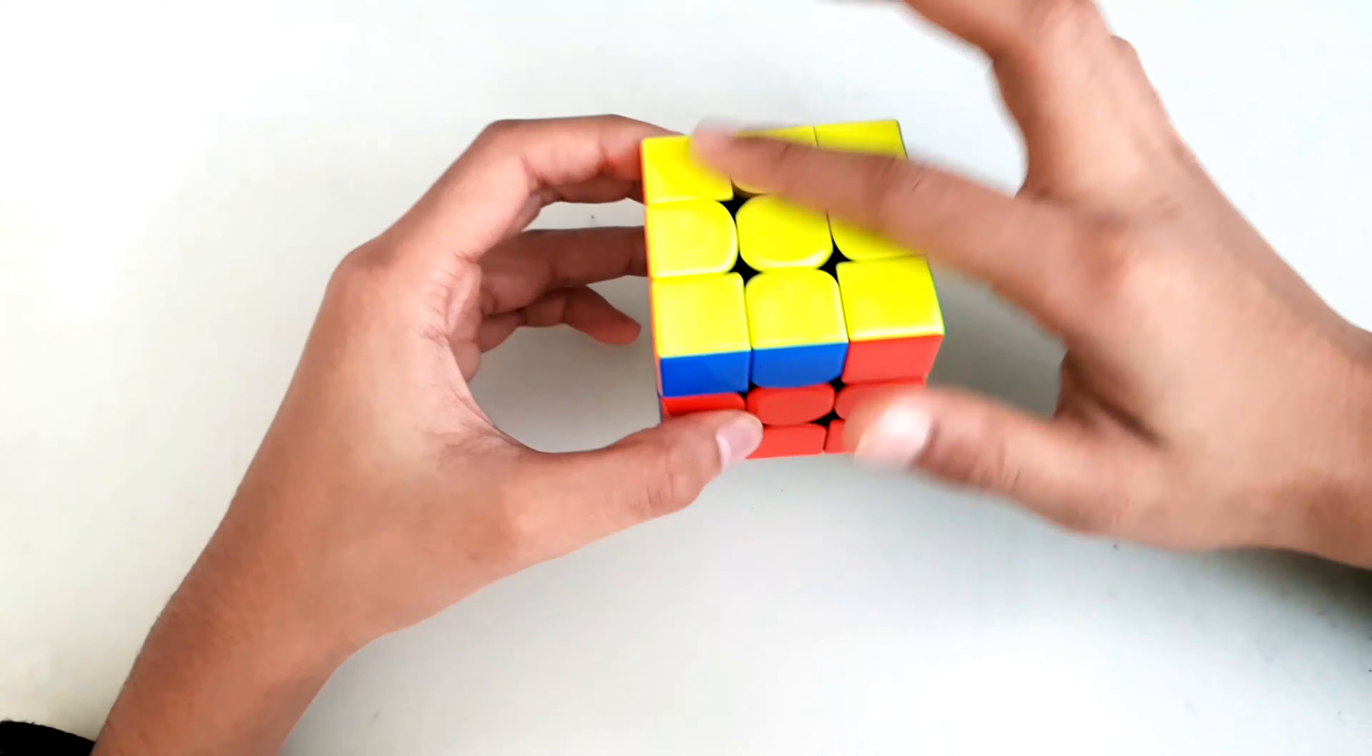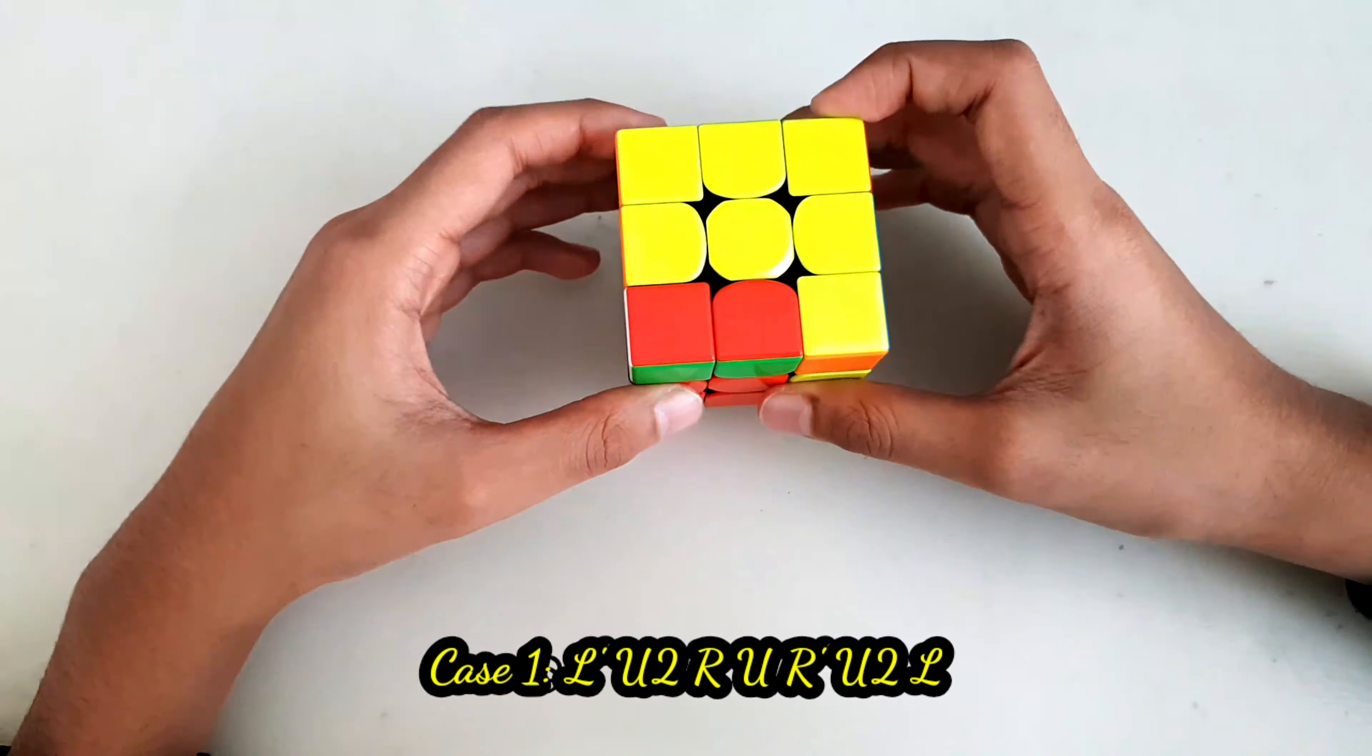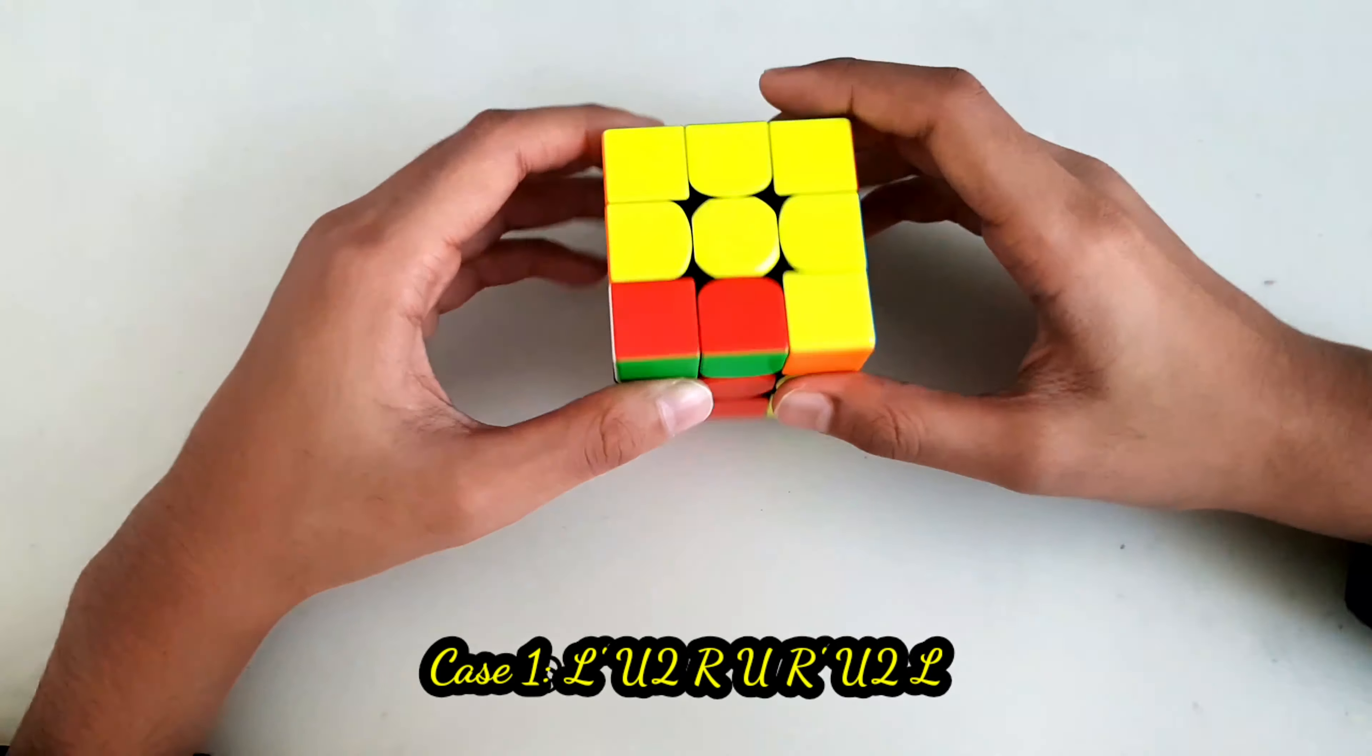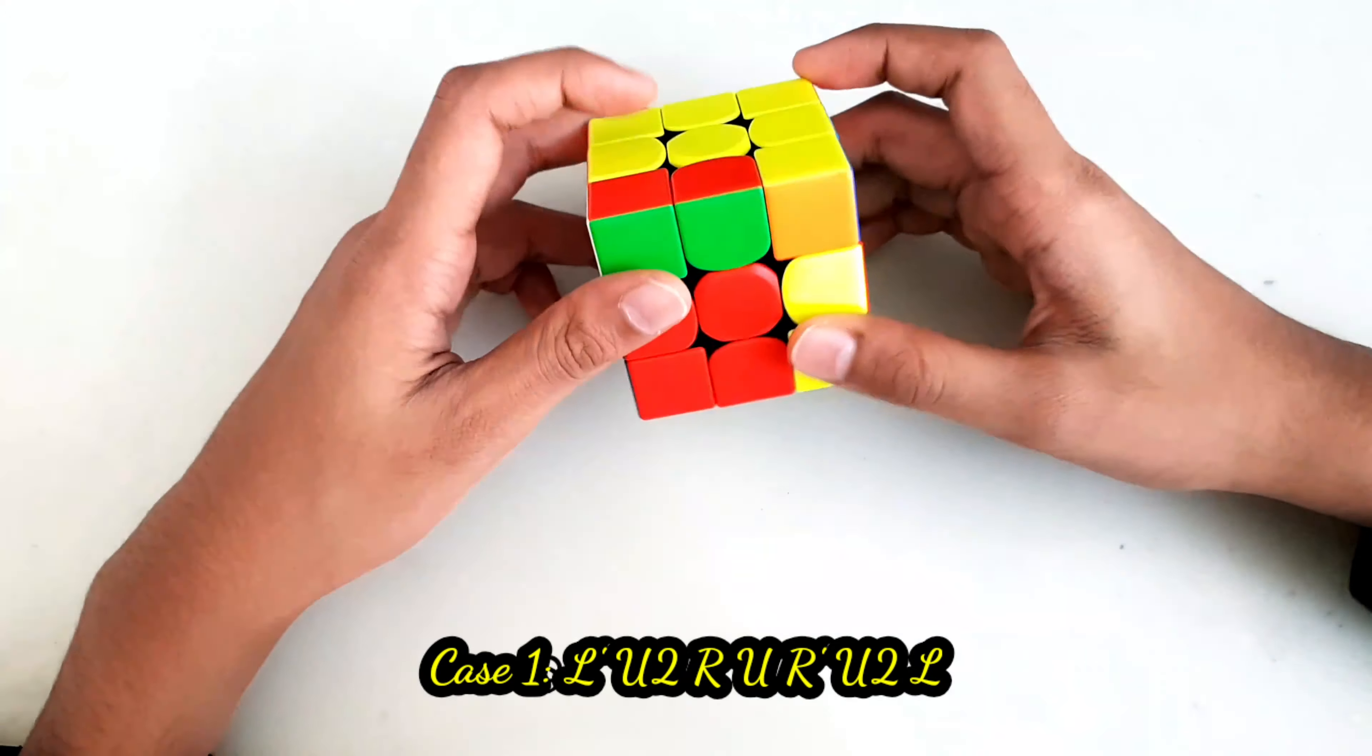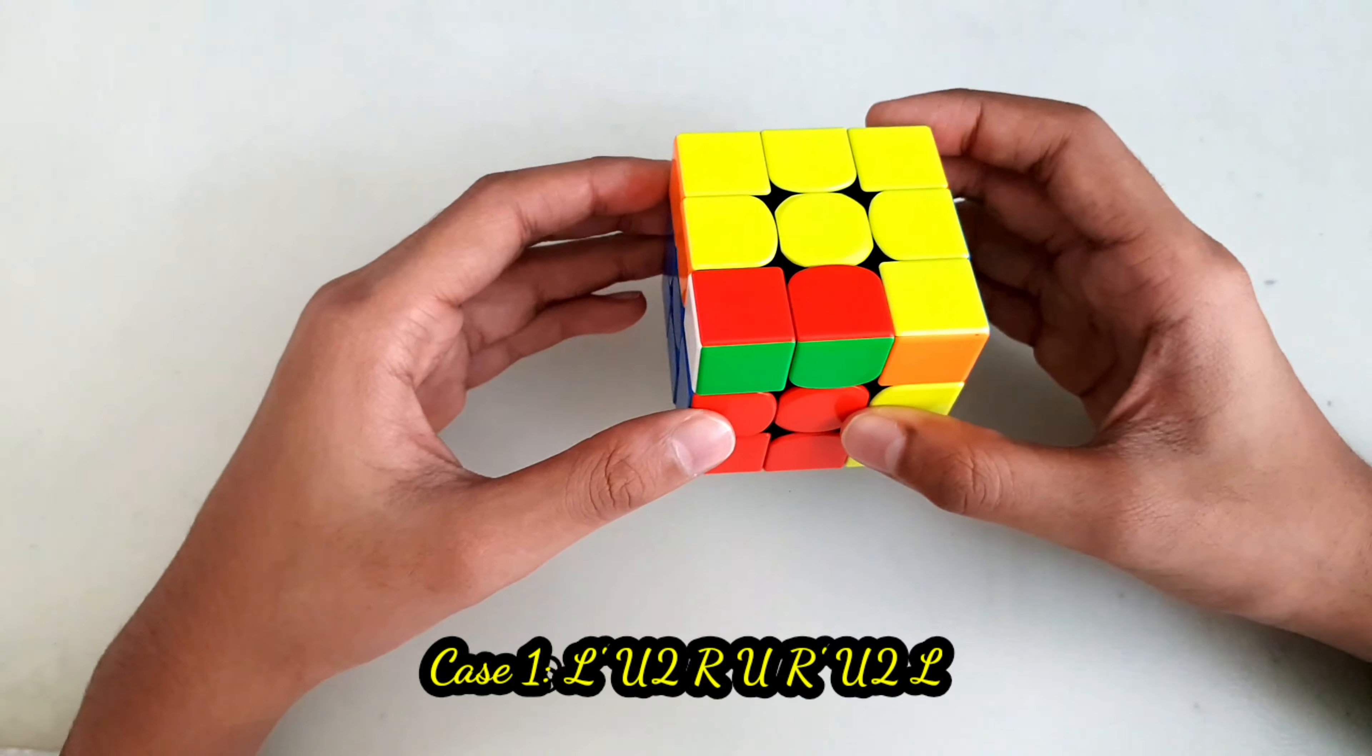Starting with case number one. This is a case where you have almost all of the yellow done except for the F2L pair. The algorithm goes like this...